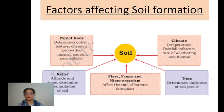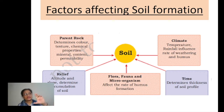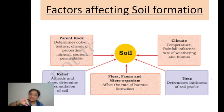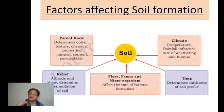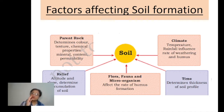The second factor is relief — the landforms of an area. Over plains, the depth and thickness of soil, or soil profile, will be greater. On mountain or hill slopes, the thickness of soil will be less, because soil is washed away by water. Humus content — the organic matter which makes soil fertile — will also be less on slopes.